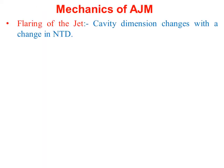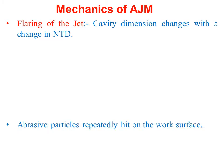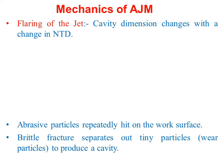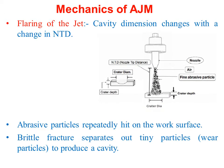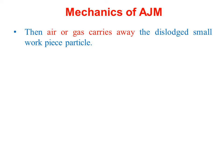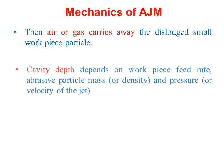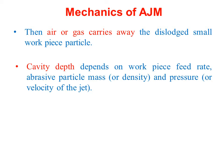Mechanics of AJM: Flaring of the jet, i.e., the cavity dimension changes with a change in nozzle-to-tip distance (NTT). Abrasive particles repeatedly hit the work surface. Brittle fracture separates out tiny particles to produce a cavity with diameter greater than or equal to the nozzle inner diameter, depending upon the nozzle-to-tip distance. Air or gas carries away the dislodged workpiece particles. Cavity depth depends on the workpiece feed rate, abrasive particle density, and pressure.